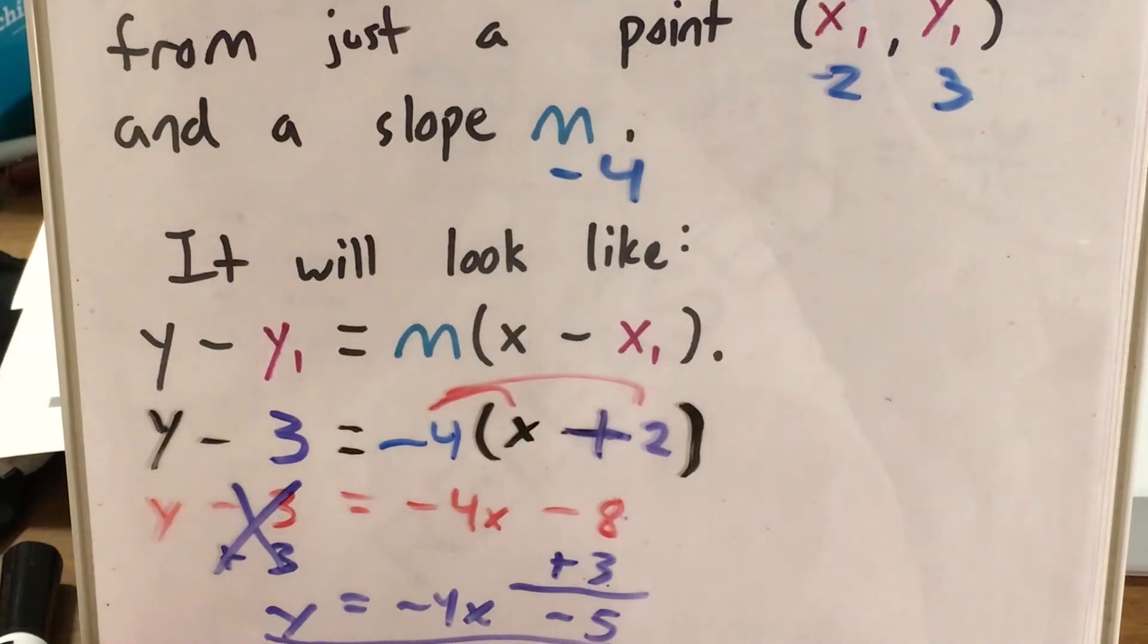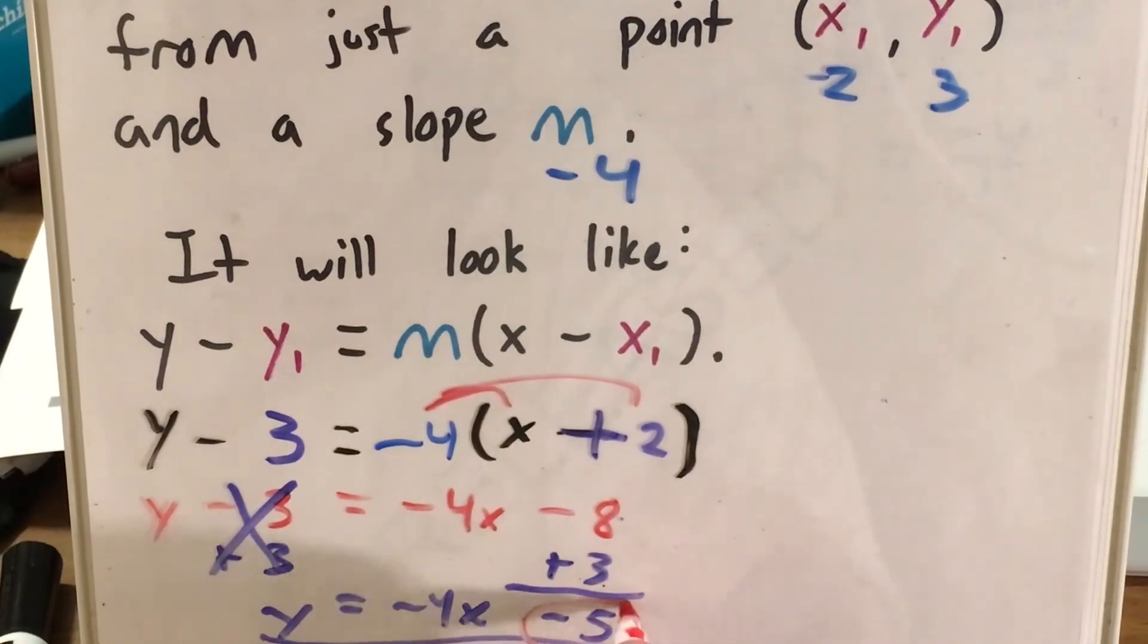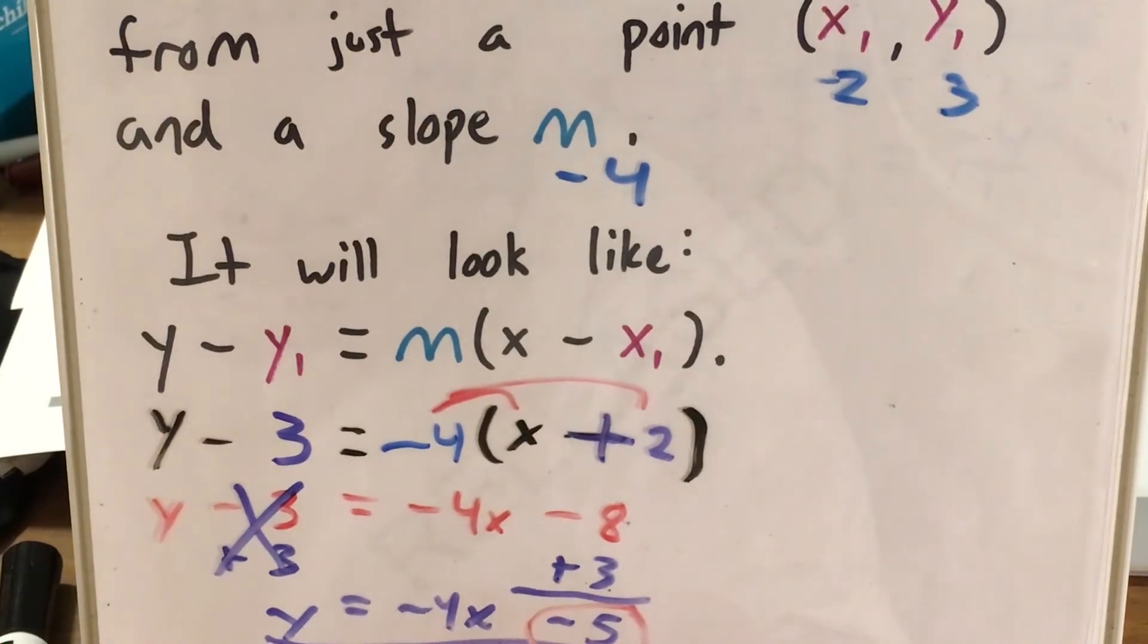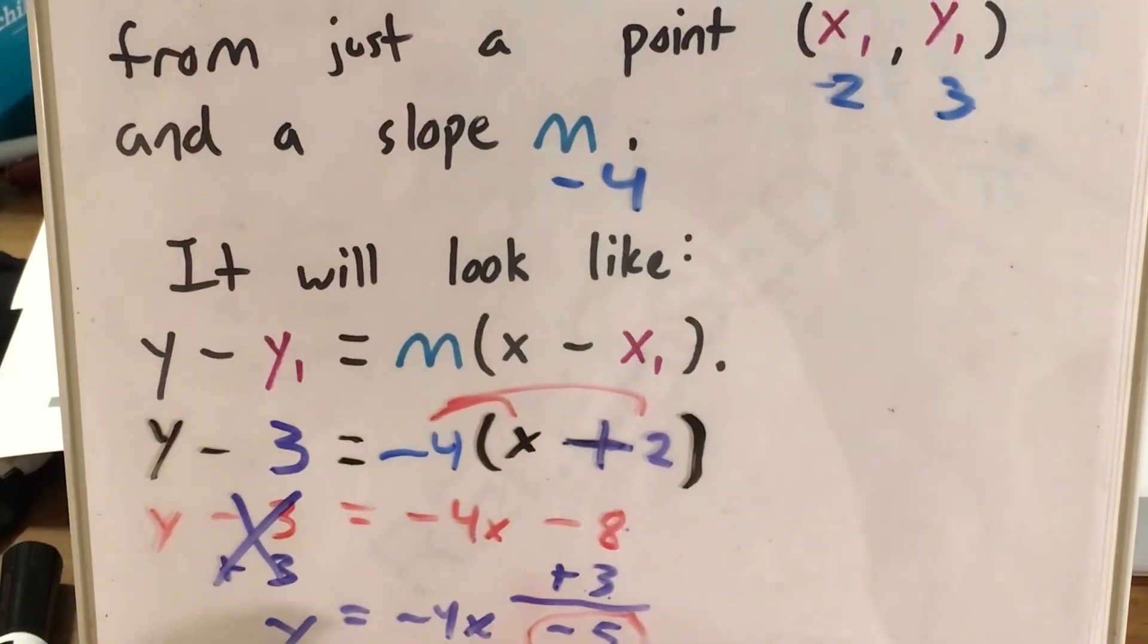The y-intercept is the constant, the number not attached to any variable. That's -5. Now that I have the y-intercepts of both functions,